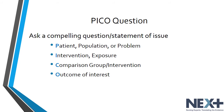C is for comparison group or intervention. This may include a placebo. It can include the current standard of care or even be compared with a group that has no exposure to the intervention. Sometimes your question may not have a comparison group and that is okay. O is for outcome. This is the result that you want to observe and measure.